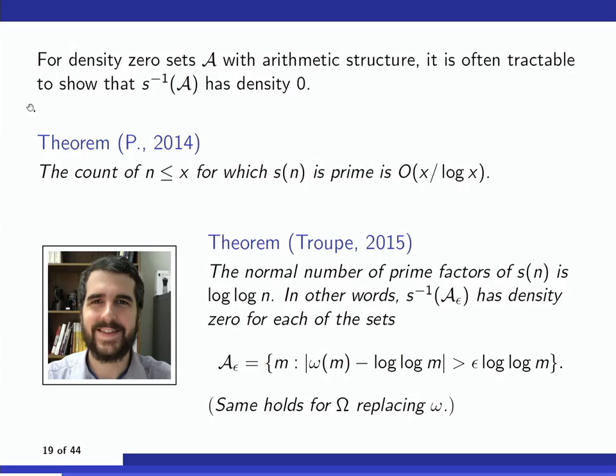The first recent results I want to discuss are results toward the EGPS conjecture. For density-zero sets A with a certain amount of arithmetic structure, it's not so hard to prove the conjecture. For example, there's a theorem that the number of n up to x with s(n) prime is big-O of x/log x — so the preimage of the primes under s has density zero. Conjecturally the count should be asymptotically x/log x, but one can prove the big-O bound.